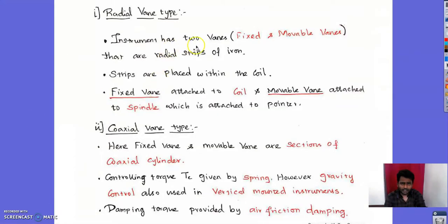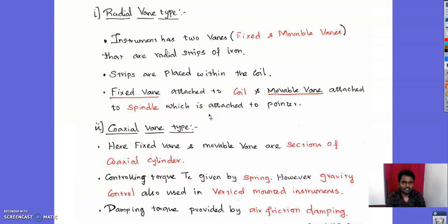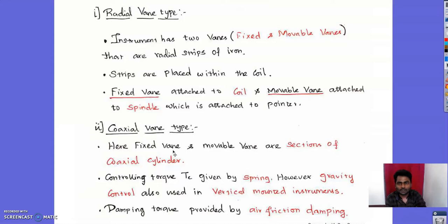In the radial vane type, the fixed and movable vanes are radial strips of iron placed within the coil. The fixed vane is attached to the coil and the movable vane is attached to the spindle, which is attached to the pointer. In the coaxial vane type, the two vanes are sections of a coaxial cylinder, which is why it is termed a coaxial vane.